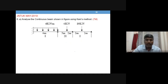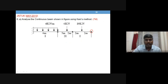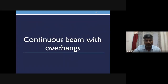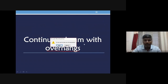Take this question from the May 2019 JNTUK exam as an assignment — practice it just like what you have seen, since it is also a case of a hinge end. Analyze the continuous beam shown in the figure using Kani's method; it is worth 7 marks. In the next session, we will take up the case of a continuous beam with overhangs. Thank you.